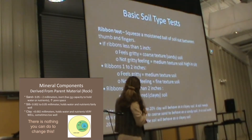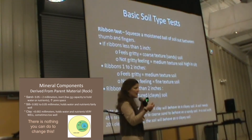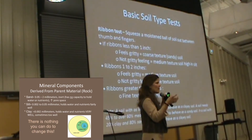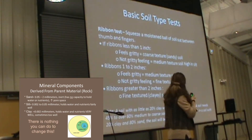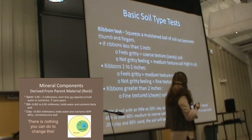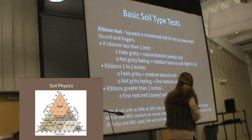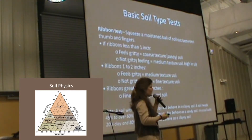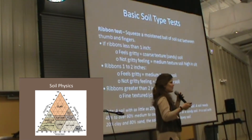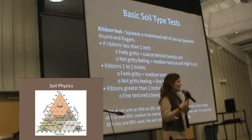This is the ribbon test: take the soil and rub it through your fingers, judging how long a ribbon you can form. The shorter the ribbon, the more coarse-grained your material is, because it won't stick together and maintain a long ribbon. If it's short, it's varying degrees of sand. If it starts to break off at one or two inches, it's a medium texture — more of a silty soil. If it's over two inches, you're going to have a clay soil.